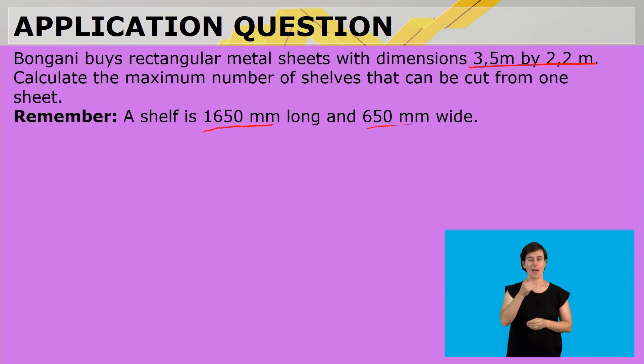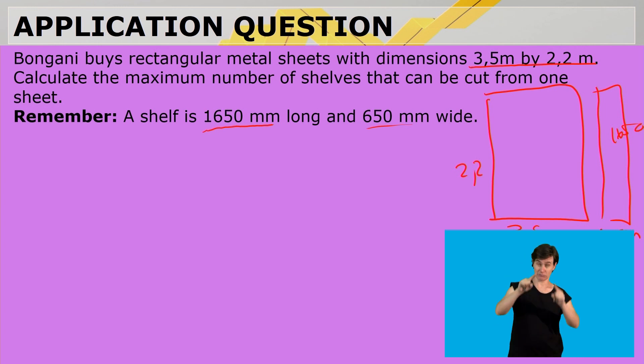Now, remember, because we're working with rectangles, we are working with a rectangular sheet of metal, which is 3.5 by 2.2. And we are working with a shelf that is 650 millimeters by 1,650.